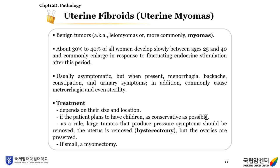Uterine myomas are benign tumors, more commonly called fibroids. About 30% to 40% of all women develop them, usually between ages 25 and 40, and they are usually asymptomatic. When symptoms are present, they include menorrhagia, backache, constipation, and urinary symptoms. The treatment depends on their size and location; usually there is no treatment required.